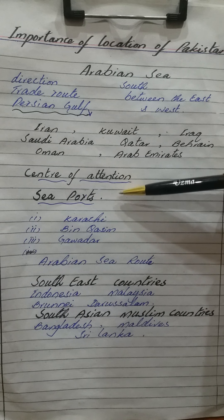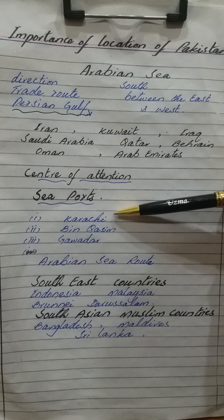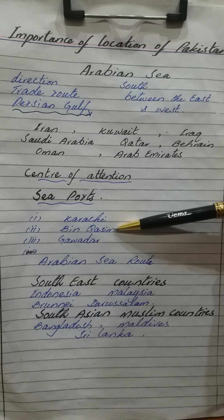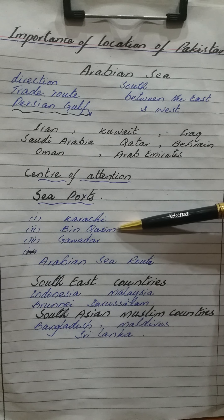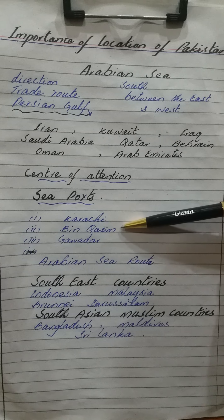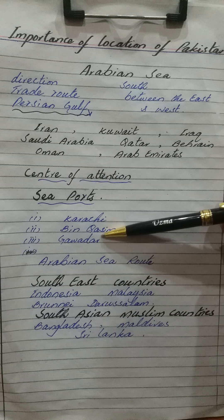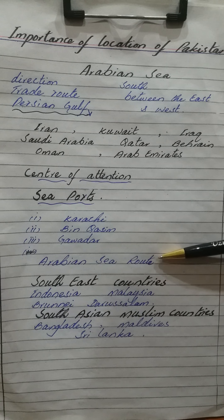Now we will talk about the important seaports on the Arabian Sea. Here is the largest seaport, Karachi — Port Qasim — which is towards the east side of Pakistan and is very close to the steel mills of Pakistan. The next one is on the coastal area of Balochistan: Gwadar Port, which is also a very important seaport.